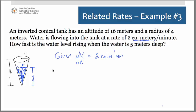And what we're trying to find is dy/dt because y represents the height and we want to know how fast is the water level rising when y is 5 meters.